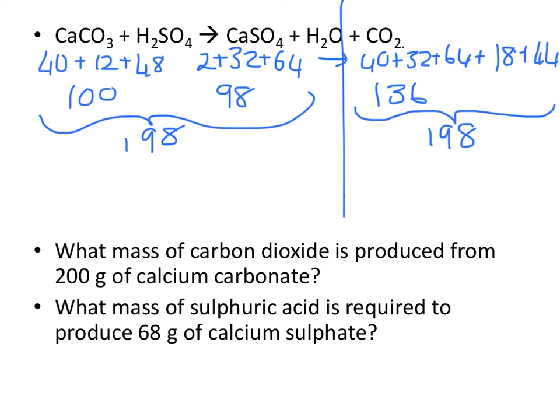What mass of carbon dioxide is produced from 200 grams of calcium carbonate? What did I do to 100 to make it into 200? I times by 2. So what did I do to 44? I times that by 2 and I get 88 grams.